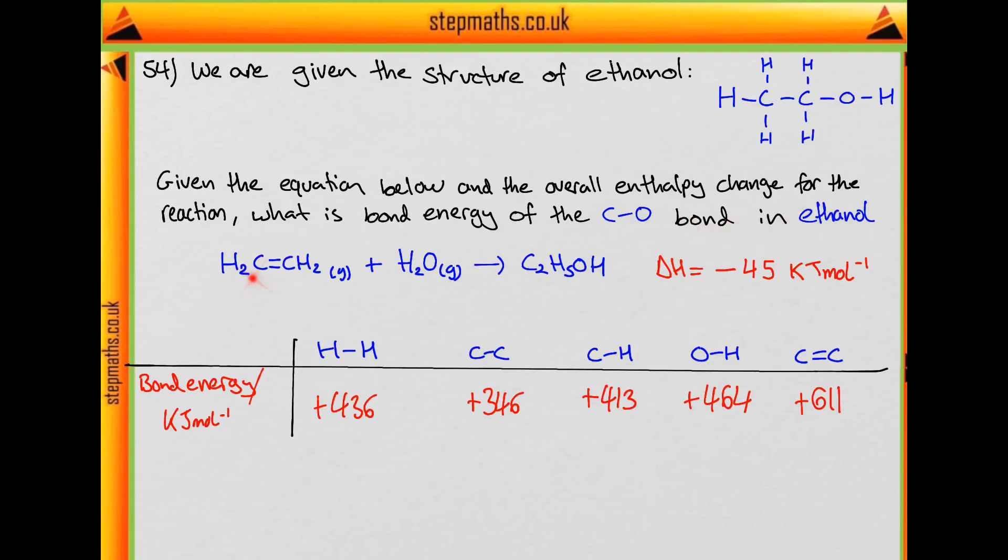So our reaction here is ethene plus water goes to ethanol with an enthalpy change of minus 45 kJ per mole. And we are given a list of enthalpy bond energies for various bonds.